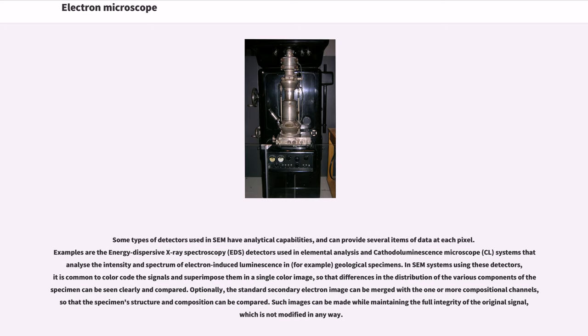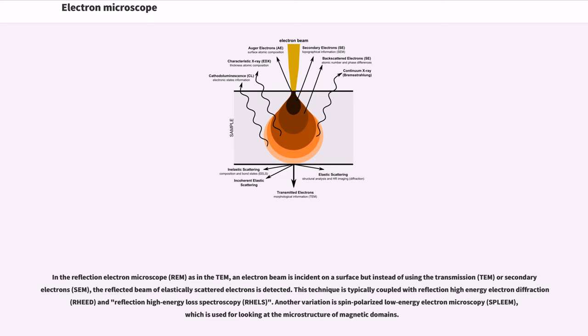Optionally, the standard secondary electron image can be merged with the one or more compositional channels, so that the specimen structure and composition can be compared. Such images can be made while maintaining the full integrity of the original signal, which is not modified in any way.